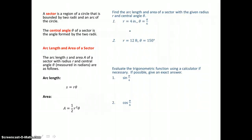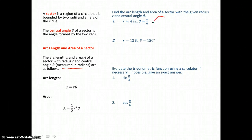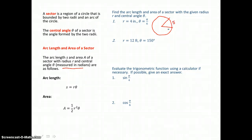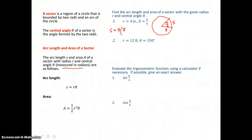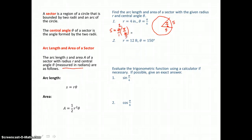Now we want to find the arc length and area of a sector with radius r and central angle theta. Remember that theta must be measured in radians, not degrees. This sector has a radius of 4 inches and theta of π/6, which is already in radians. For arc length S = rθ, substituting 4 for radius and π/6 for theta, cancelling a factor of 2 top and bottom, we get 2π/3 inches for the arc length.